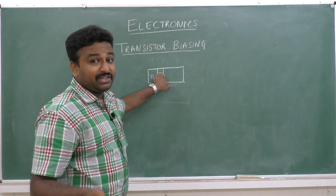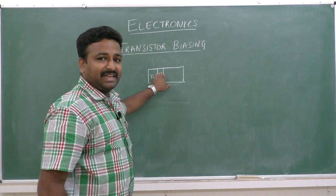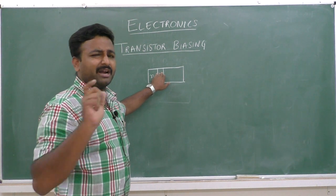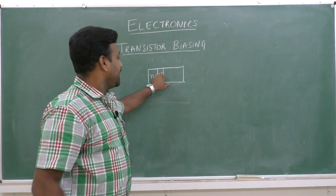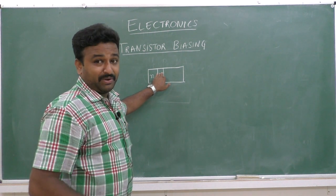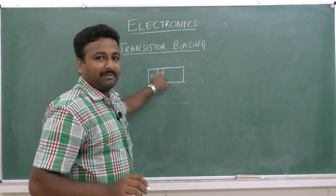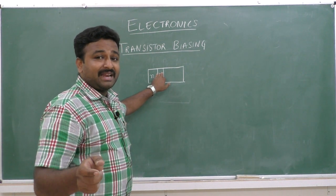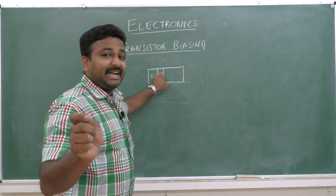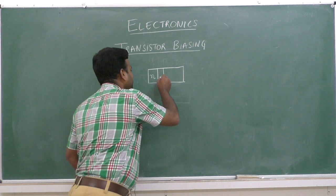The narrow-sized middle region is doped with P-type impurities — that is, trivalent impurities — with a low level of doping concentration.